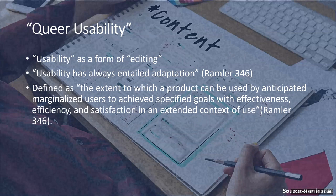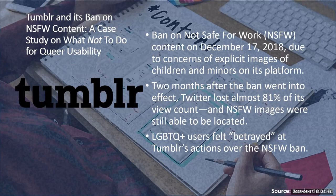This also links to the way Poppin relates to nurturing, caretaking, and empathy. Finally, we'll have a brief discussion on queer usability, and it is important to define usability as a form of editing. As Mary E. Rambler explains in her study, usability has always entailed adaptation. She defines queer usability as the extent to which a product can be used by anticipated marginalized users to achieve specific goals with effectiveness, efficiency, and satisfaction in an extended context of use.